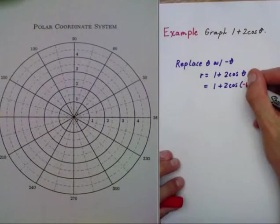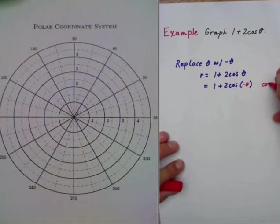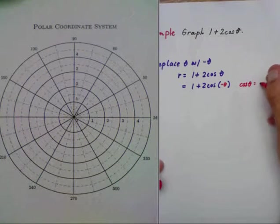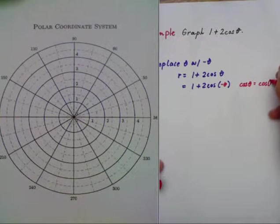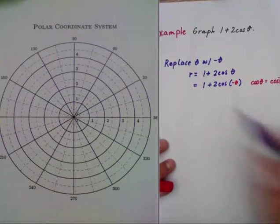Now, cosine theta is an even function, so cosine theta equals cosine of negative theta. Those are the same things, so my equation does not change.